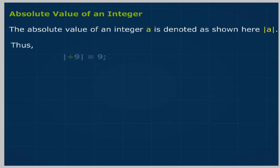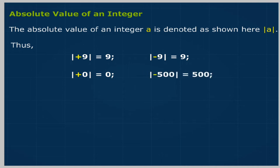Thus, the absolute value of +9 is equal to 9. The absolute value of -9 is equal to 9. The absolute value of 0 is equal to 0. The absolute value of -500 is equal to 500.